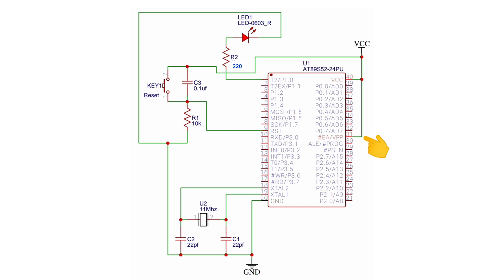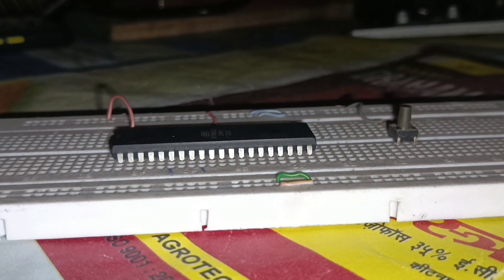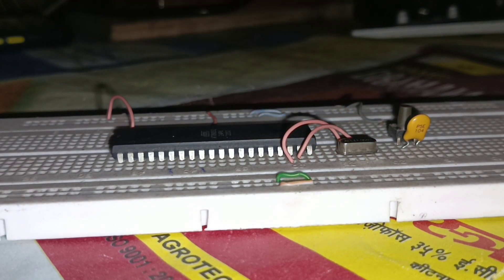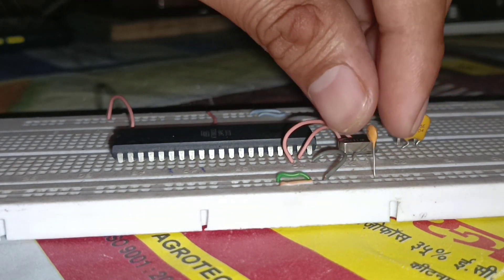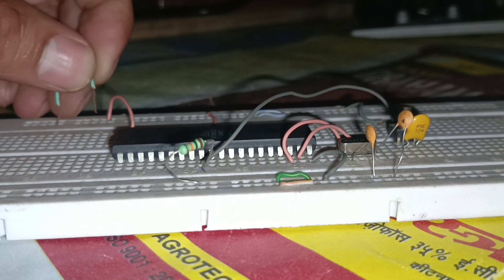The external access enable pin of the AT89S52 microcontroller is connected to VCC. The positive terminal of the LED is connected to pin 0 of port 1 of the AT89S52 microcontroller through a 220 ohm resistor, and the negative terminal of the LED is connected to ground.